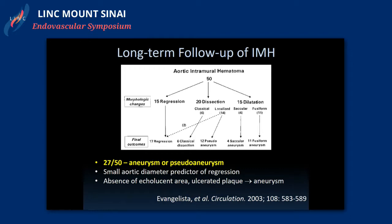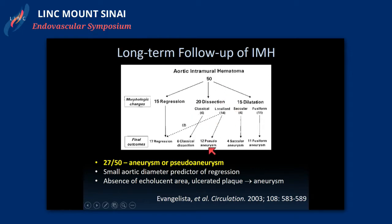It's important to know that intramural hematomas and penetrating aortic ulcer is a pathology that evolves over time. Evangelista et al. in Circulation 2003 looked at 50 patients who initially presented with intramural hematoma: 15 went on to full regression with return to normal aorta, 20 went on to dissection, and 15 went on to aortic dilatation. Of those who developed dissection, 12 developed pseudoaneurysm locally and six progressed to classical dissection. Notably, 27 out of 50 — more than half — developed aneurysmal or pseudoaneurysmal changes. Small aortic diameter predicted regression, and absence of echolucency or ulcerative plaque was a prognostic factor for aneurysm development.